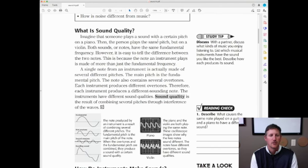This is because the note an instrument plays is made of more than just the fundamental frequency. A single note from an instrument is actually made of several different pitches. The main pitch is the fundamental pitch. The note also contains several overtones. Each instrument produces different overtones. Therefore, each instrument produces a different sounding note. Sound quality is the result of combining several pitches through interference of waves.